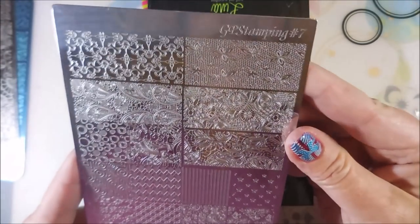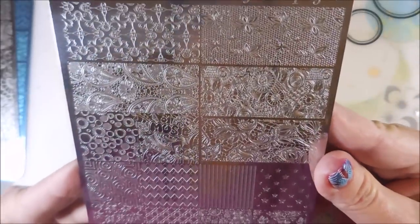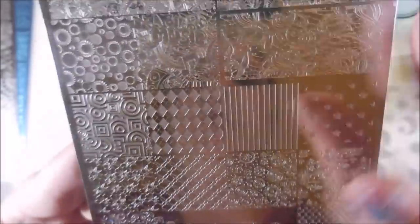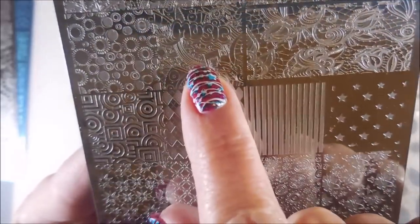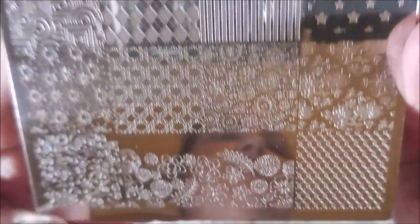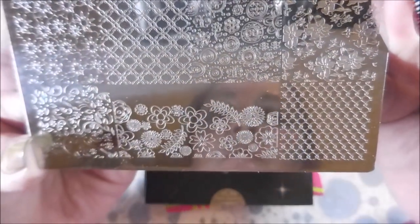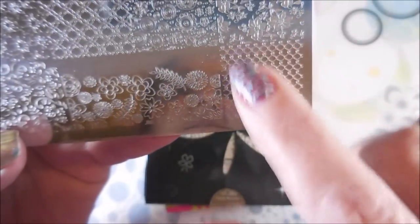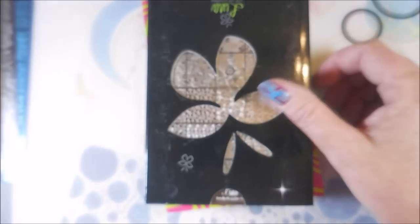And then we've got a GPS. I've never had one of these either. GPS stamping number seven. Look how big these are. It doesn't matter how long somebody's nails are, they could totally use these. Those up there are huge and then you've got these square ones. That one says music. I love it. That is such a cool plate.